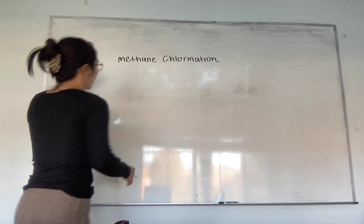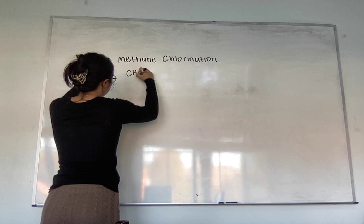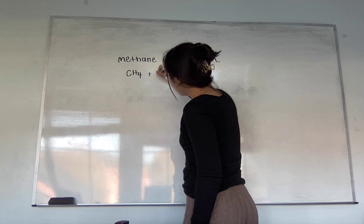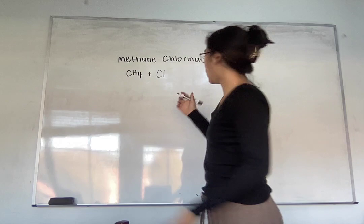So anyway, methane chlorination, let's break this down. What's methane? The compound for methane is CH4. What's chlorine? We're adding chlorine, usually it's one of those, basically it's going to be a gas, and they're usually always diatomic. I think that's the word for it.